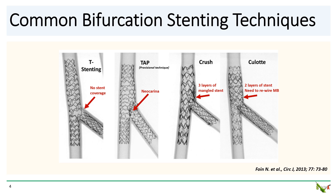And there's culotte, which is also very well studied. It's suitable for all bifurcation angles. But for culotte, the side branch must be comparable in size to the main branch. Culotte does have a couple of drawbacks: it is the only technique in which you will temporarily lose wire to the main branch, and it does leave behind two layers of stents in the proximal part of the main branch.